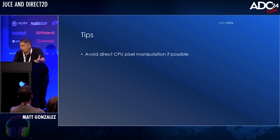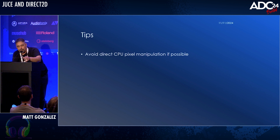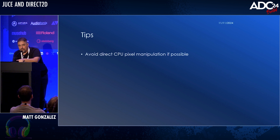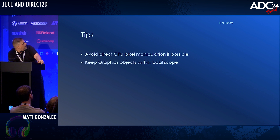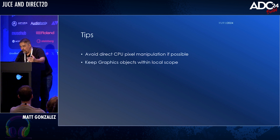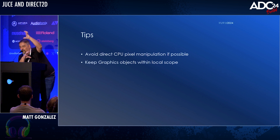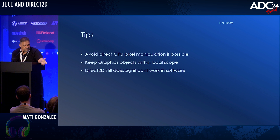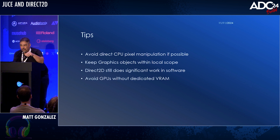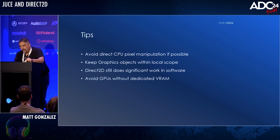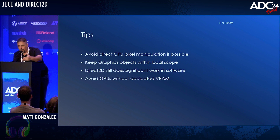A few other tips. I would avoid writing to the bitmap with the CPU if you can — instead, rasterize bitmaps using the new renderer and keep them in the GPU. Be mindful that there is currently a cost, because a software backup copy is kept, so anything you rasterize on the GPU has to be copied back to the CPU. Keep your graphics object within local scope — the renderer executes the command queue when it's done, so just wrap curly braces around your graphics object when rendering an image. Also, GPUs without dedicated VRAM don't perform very well with Direct2D — especially integrated GPUs sharing RAM with the CPU, where you're losing memory bandwidth and dealing with a lower-end GPU.